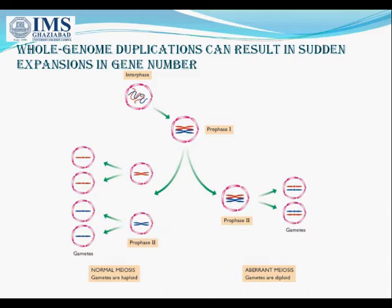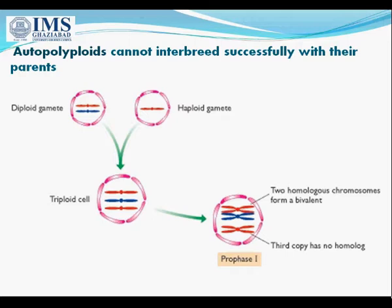This allows an autopolyploid to reproduce successfully but generally prevents interbreeding with the original organism from which it was derived. This is because a cross between, for example, a tetraploid and a diploid would give a triploid offspring, which would not itself be able to reproduce because one full set of chromosomes would lack homologous partners. Autopolyploids cannot interbreed successfully with their parents. Hugo de Vries, during his work with the evening primrose Oenothera lamarckiana, isolated a tetraploid version of this normally diploid plant, which he named Oenothera gigas.